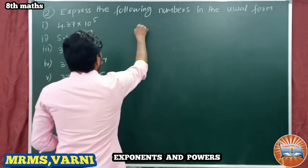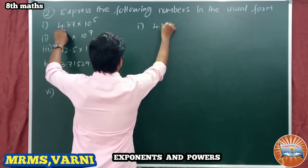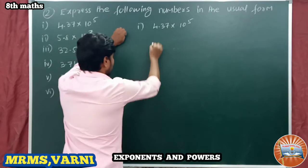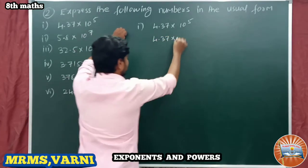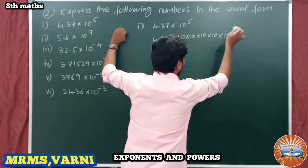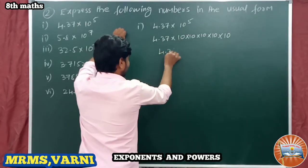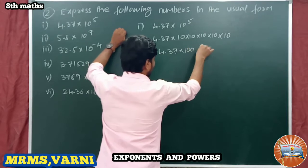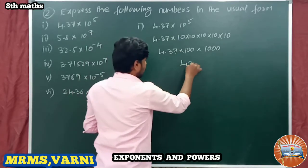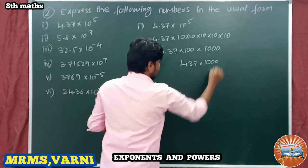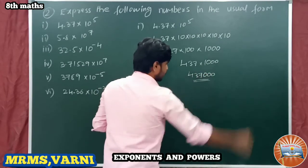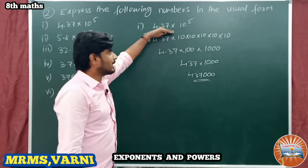The first one: 4.37 into 10 power 5. So 4.37 into 10^5 — we can write 10 into 10 into 10 into 10 into 10. And 4.37 we can split as 100 into 1000. If you multiply 4.37 into 100 you get 437, then 437 into 1000 becomes 437000. This is the usual form of this standard form.